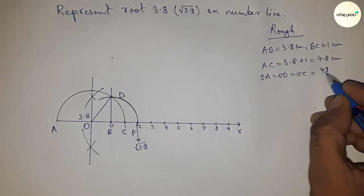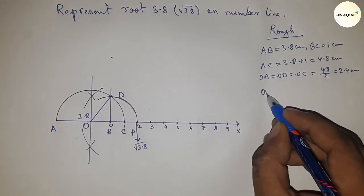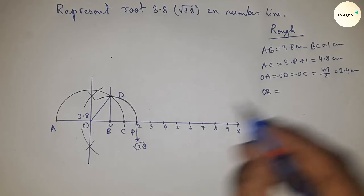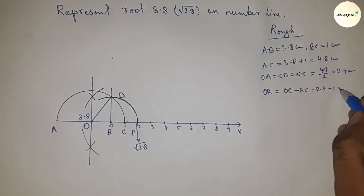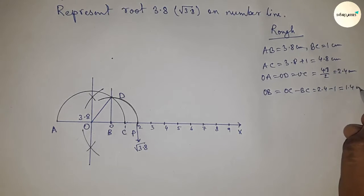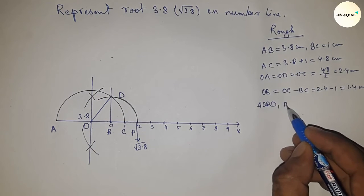The length OB equals OC minus BC, which is 2.4 minus 1, so 1.4 centimeters. From right angle triangle OBD, we can write BD equals, by Pythagorean theorem, the square root of OD squared minus OB squared.